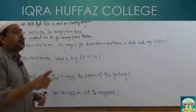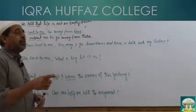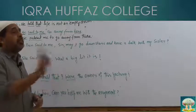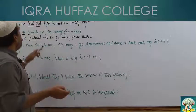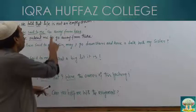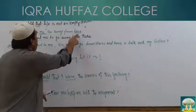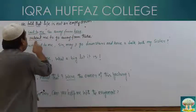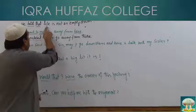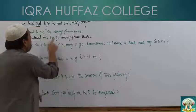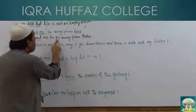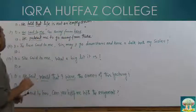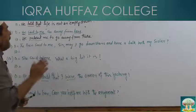हम rules को बताते हुए यह discuss कर चुके हैं कि जब reporting verb past tense में होगी और कोई specific word दिया हुआ होगा, तो उसको भी convert करेंगे: 'now' → 'then', 'here' → 'there', 'these' → 'those'। तो 'he said to me, go away from here' का indirect: 'He ordered me to go away from there' — यह narration तब्दील हो गया।